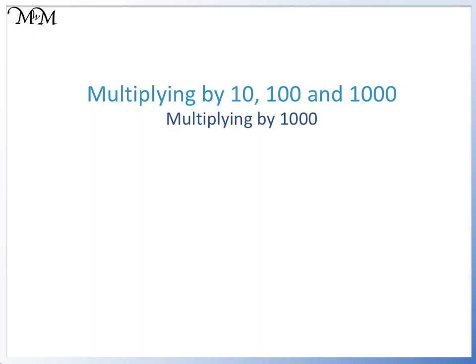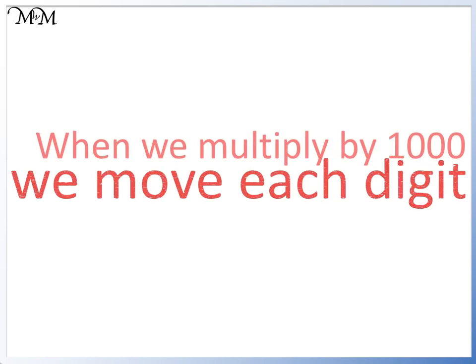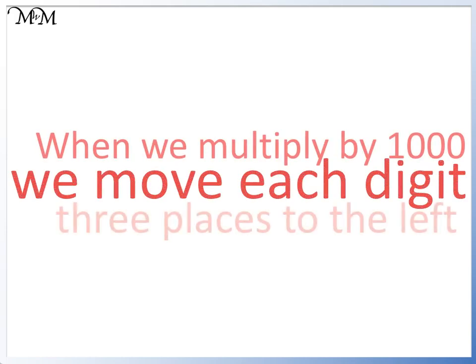Hi and welcome to our lesson on multiplying by 10, 100 and 1000. In this lesson we will be looking at multiplying by 1000. When we multiply by 1000, we move each digit 3 places to the left.